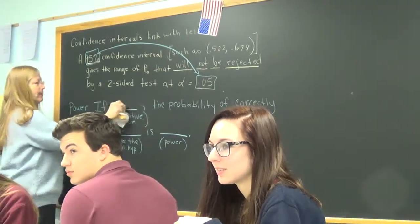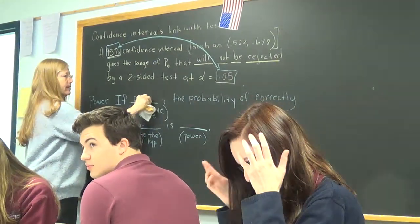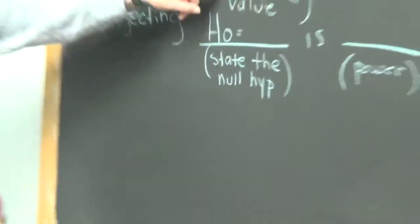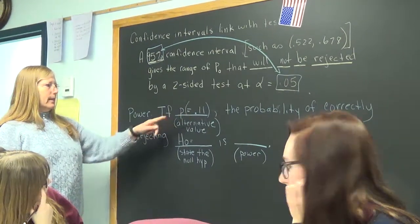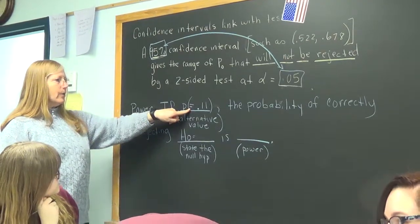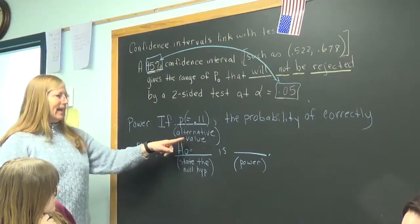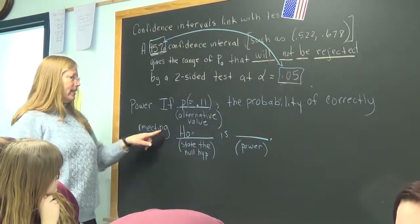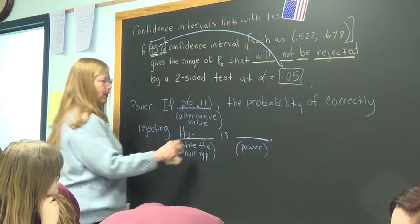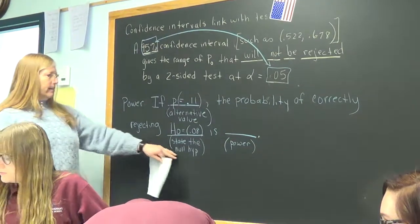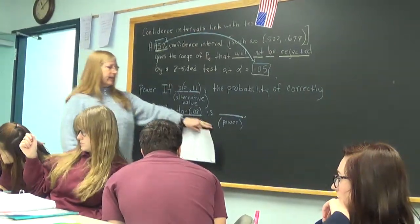If P equals an alternative value, like with the potatoes, say the alternative value is 0.11. So that's going to change for every problem. So if P equals 0.11, that's the alternative value. The probability of correctly rejecting H sub null equals, in this case, is 0.08.